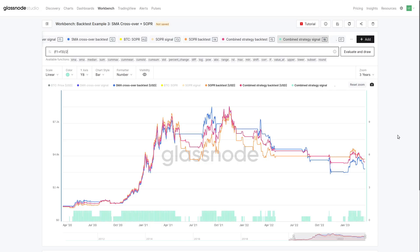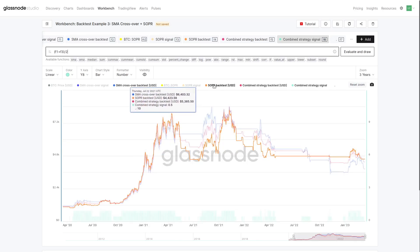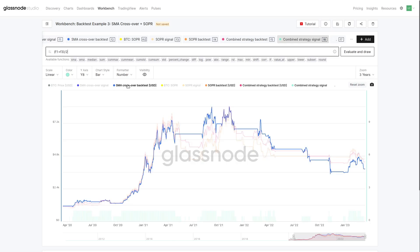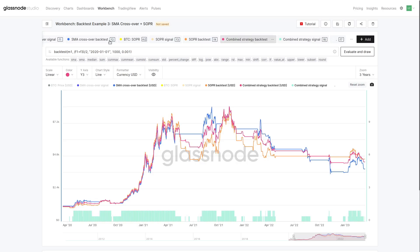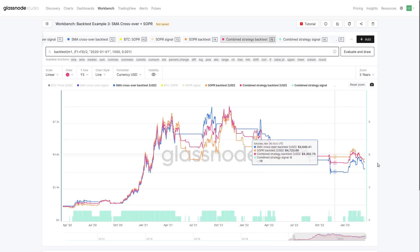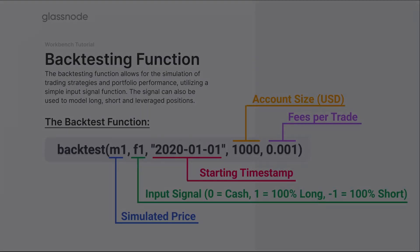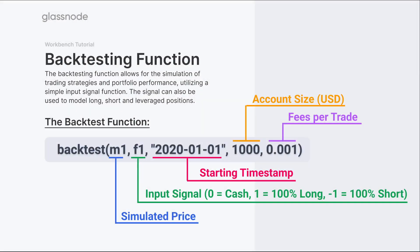With that context, the orange curve shows the SOPR-only backtest, alongside the simple moving average-only backtest, and the combined strategy backtest — which sums the two signals, divides by two, and combines both an on-chain and off-chain approach. Thanks for tuning in. You'll find all of these examples and charts inside a dashboard under Tutorials, plus Workbench examples inside Workbench itself, along with a full written write-up and documentation covering all of these case studies. If you have any questions, feel free to reach out. See you in the next one.